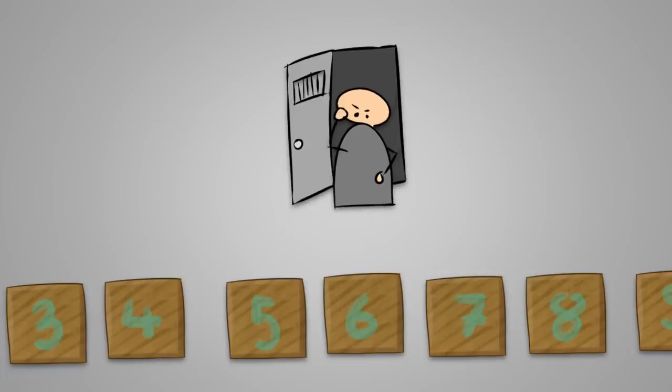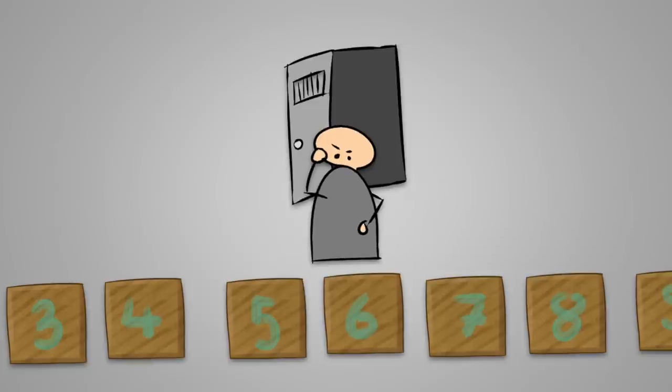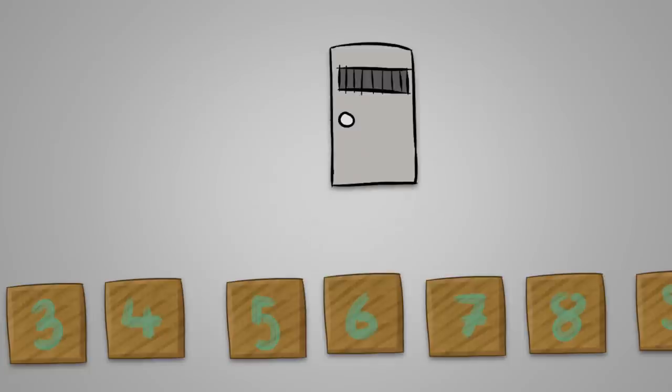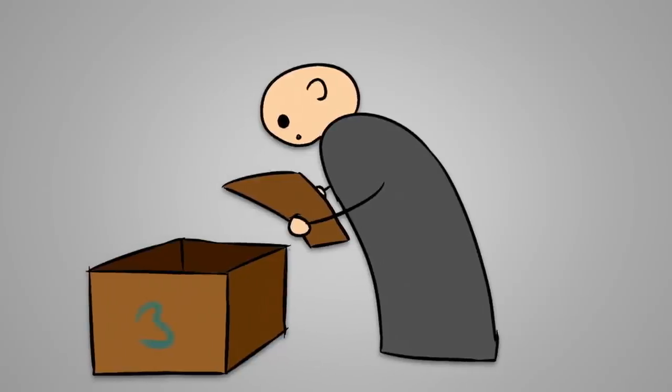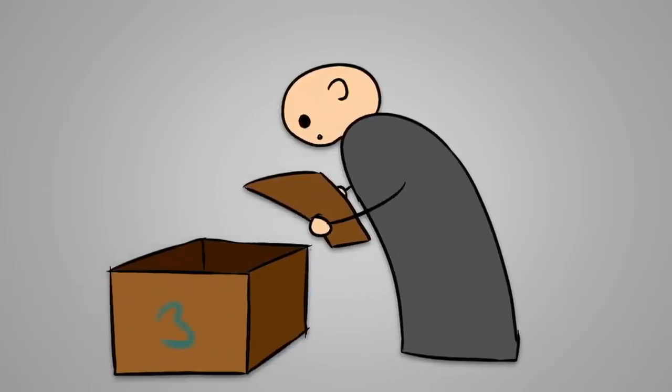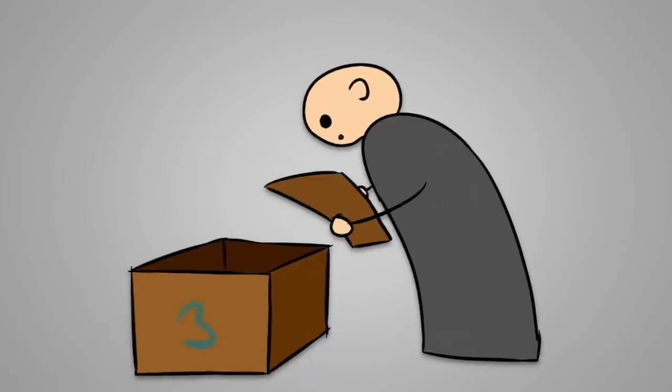The prisoners are allowed to enter the room in any predetermined order they wish, but each prisoner can only enter the room once and the game ends as soon as the 100th prisoner left the room. Once a prisoner enters the room, he can look into any 50 boxes, then shut the boxes again and leave everything exactly the way it was before he entered.